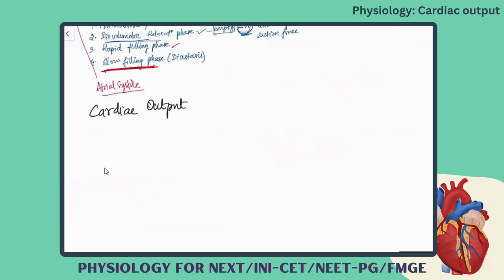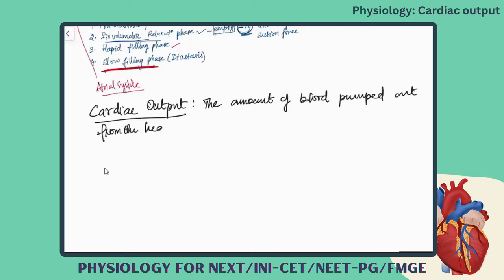Cardiac output. So what is cardiac output? It is the amount of blood which is pumped out from the heart per ventricular systole, that is, per ventricular contraction. That is cardiac output.